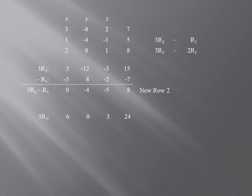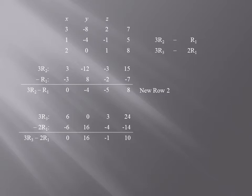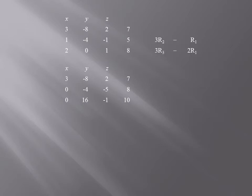Similarly, 3 times row 3 gives 6, 0, 3, 24. And when we take away 2 times row 1 — that's multiplying row 1 by negative 2 — giving negative 6, 16, negative 4, negative 14. Adding the results gives 0, 16, negative 1, and 10. Remember, 3 times row 3 minus 2 times row 1 is the new row 3. Here's the matrix that results after pivoting on the number 3.